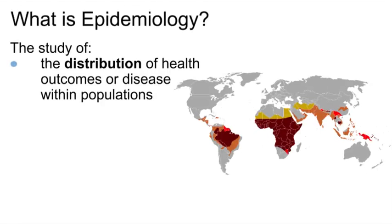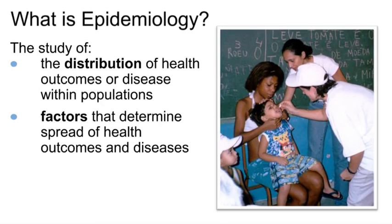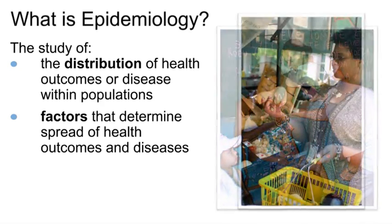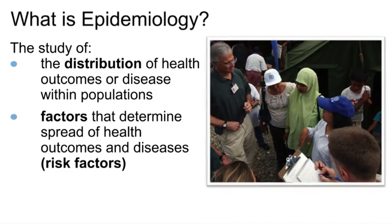Epidemiology is the study of the distribution of health outcomes or disease within populations and the factors that determine the spread of health outcomes and diseases. These factors that determine whether someone gets a certain health outcome or disease are called risk factors. Epidemiologists focus their attention at the population level rather than the individual level.